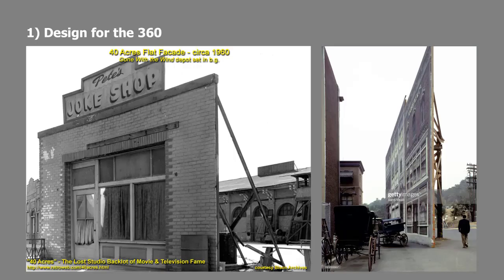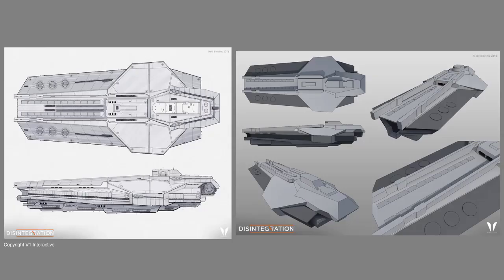Number one is design for the 360. In my film experience, a lot of things could be designed to look good from only one angle — if it's a single shot and the camera doesn't move much, there's no reason to design the back of the object. In games, far more objects will need to be seen from every angle, because you never know where the player is going to walk. So your objects will more likely be seen from every angle — you really need to think in 3D.